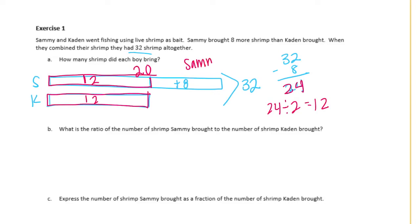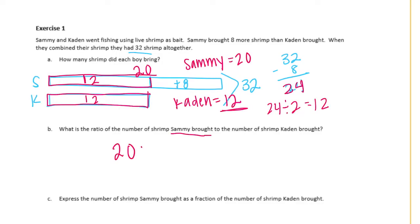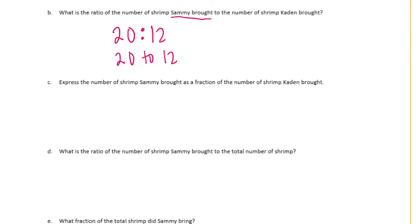So Sammy equals 20 and Kaden equals 12. What is the ratio of shrimp Sammy brought to shrimp Kaden brought? Sammy is listed first, so the ratio is 20 to 12. To express Sammy's shrimp as a fraction of Kaden's shrimp, we write it as 20 over 12.